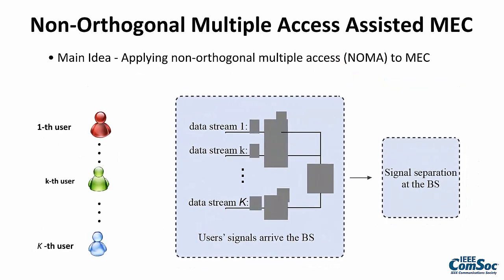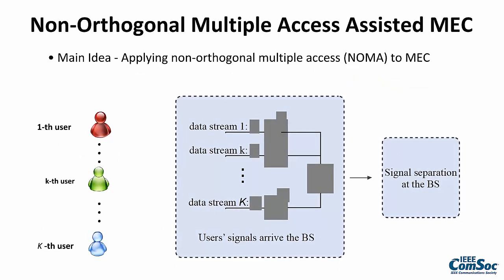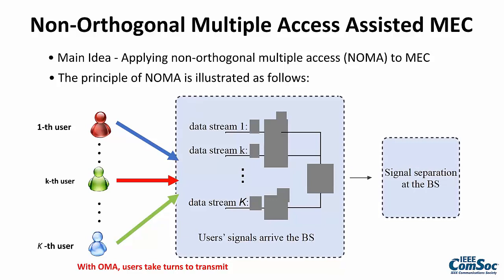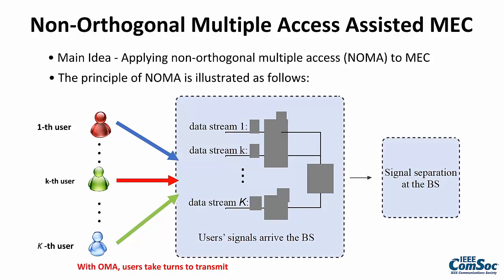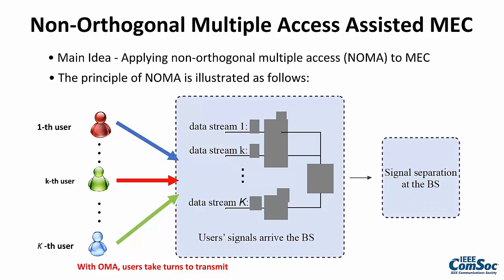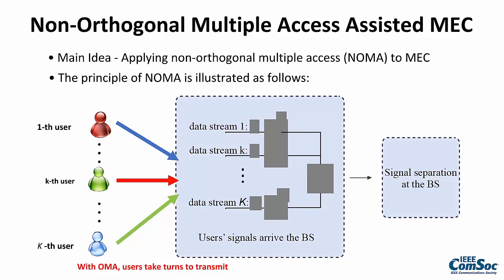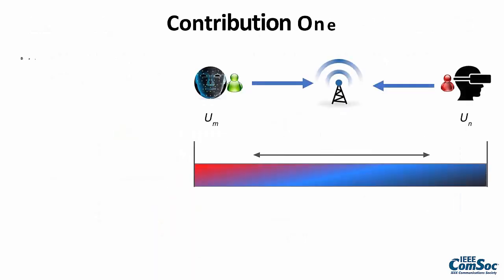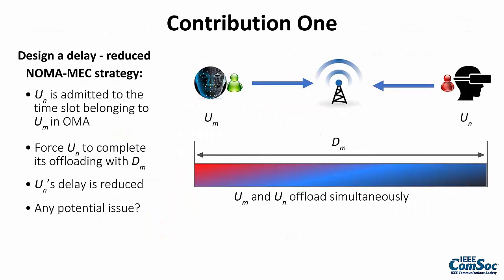The main idea of this work is to apply non-orthogonal multiple access (NOMA) to MEC uploading. The principle of NOMA is illustrated in this figure, where users communicate with their base station. If using conventional OMA, users take their turns to transmit at different time slots or frequency channels. With NOMA, users can be served simultaneously. As a result, NOMA can be naturally applied to MEC uploading — for example, it can serve both users during the first T seconds simultaneously, which leads to the first contribution: designing a delay-reduced NOMA MEC strategy.